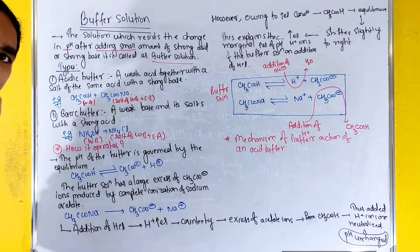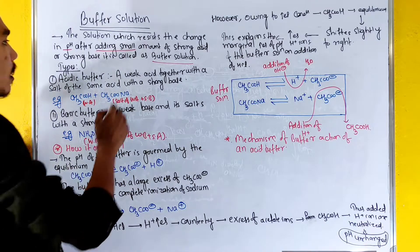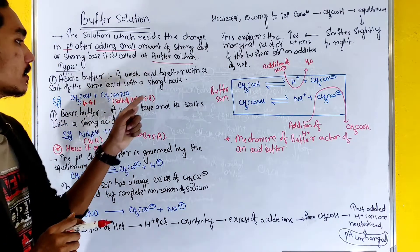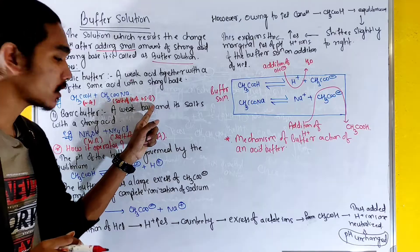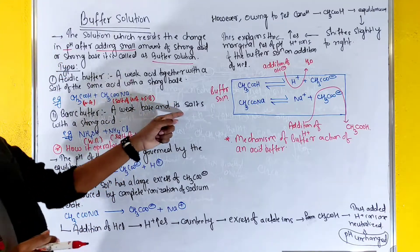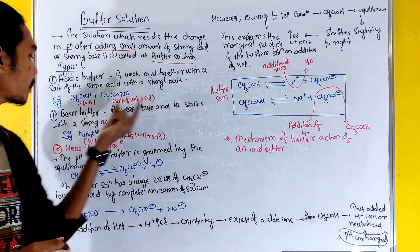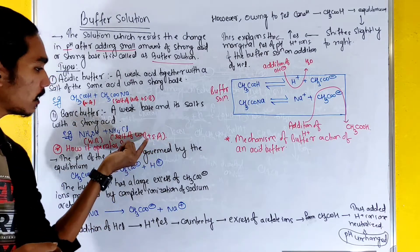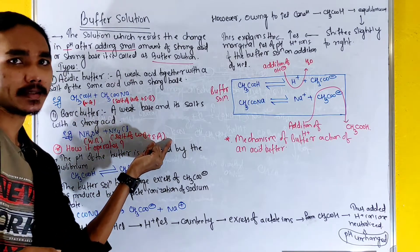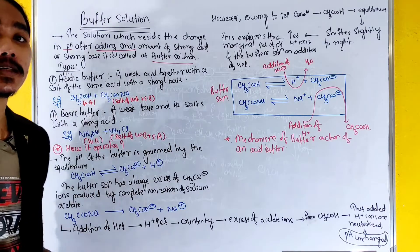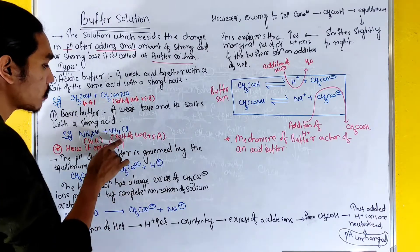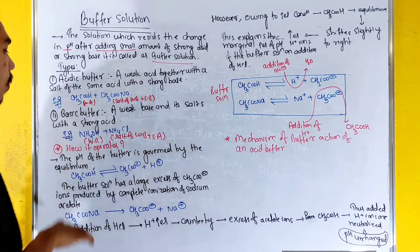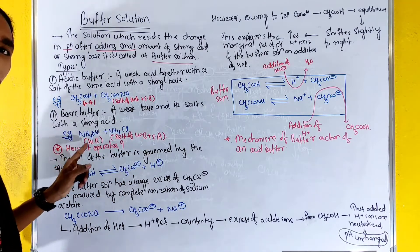To clarify: an acidic buffer is a weak acid together with a salt of the same acid with a strong base. A basic buffer is a weak base and its salt with a strong acid — for example, NH3 and NH4Cl.